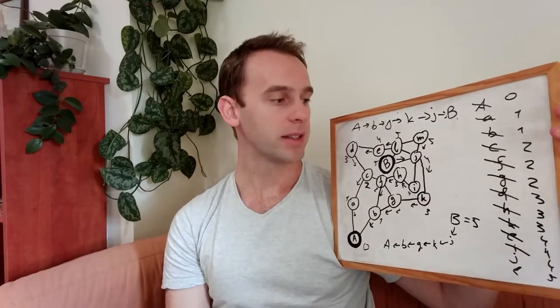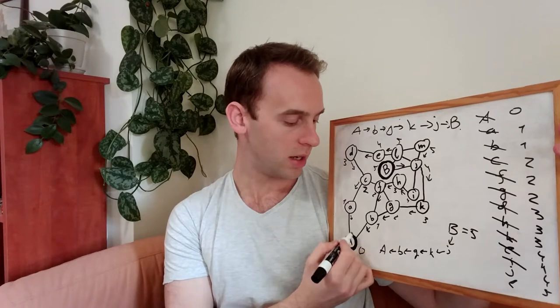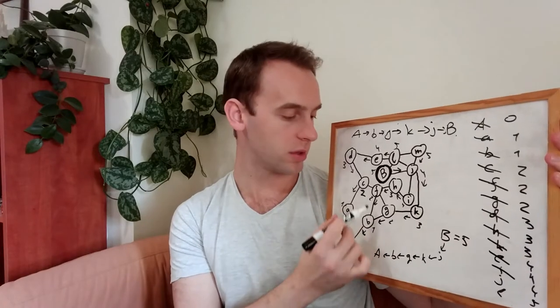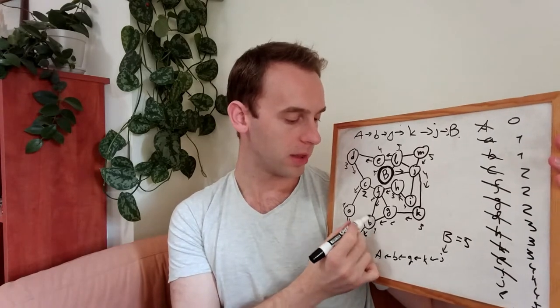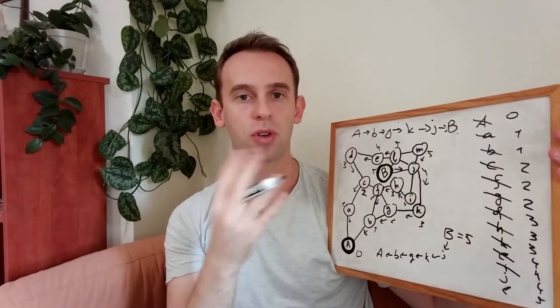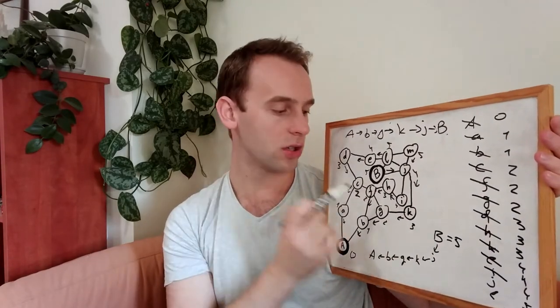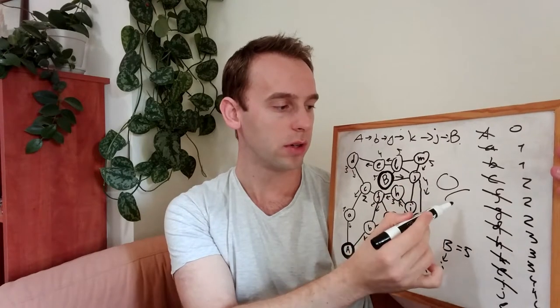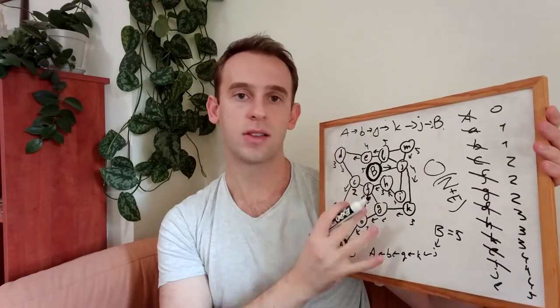One more thing that I want to talk about is the complexity of this algorithm. When we went over this graph, we went over each edge only once. When we traveled from, let's say, from node B to its neighbors, we used each edge once. And we used every node twice. One time to update the data and one time to pop it from that list. Well, maybe three or four times if you consider popping and pushing to that list. But for each node, it is a constant number of times. So the complexity of this algorithm is big O of nodes and edges. It is linear to the size of the graph.